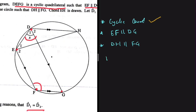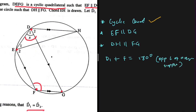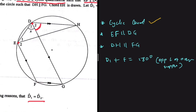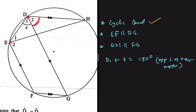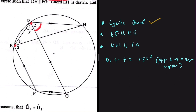So we write: d1 plus angle F equals 180 degrees, with the reason being that opposite angles of a cyclic quadrilateral are supplementary. We've now used the cyclic quad property. Let's move to our second keyword.